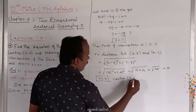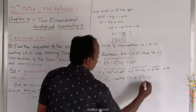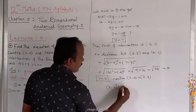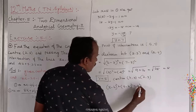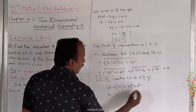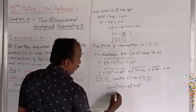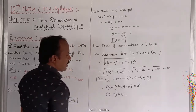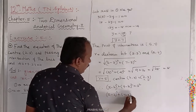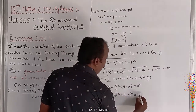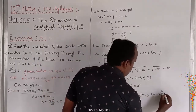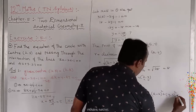Center H,K equals (2,3). The general form of the circle is: (X minus H) squared plus (Y minus K) squared equals R squared. Substituting H equals 2, K equals 3, and R equals 5: (X minus 2) squared plus (Y minus 3) squared equals 25. That is the equation of the circle.